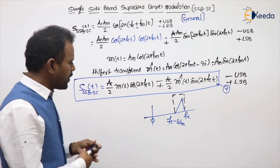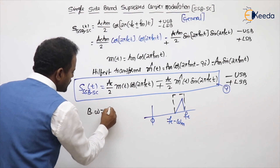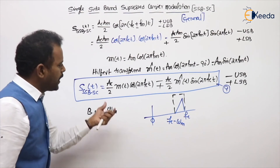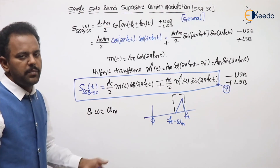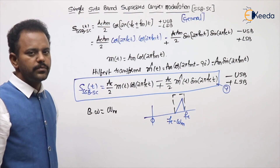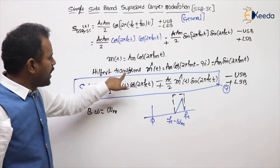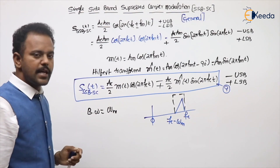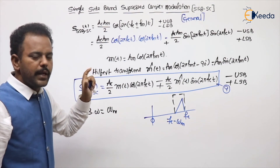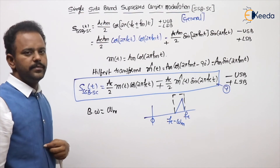What about bandwidth? As drawn in the spectrum, highest minus lowest gives ωm, so bandwidth is Fm. What about efficiency? Same — 100%. What about power? Half of the DSBSC power. So remember this general expression. The Hilbert transform property: take the signal and apply a minus 90-degree phase shift.